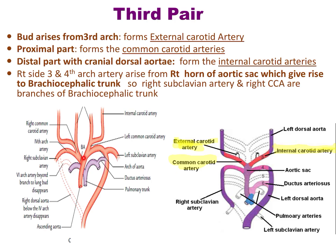On the right side, the third and fourth arch arteries arise from the right horn of the aortic sac — a common trunk. This right horn of the aortic sac gives rise to the brachiocephalic trunk. The third arch artery will form the common carotid, and the fourth arch artery will form the right subclavian. That is why the right common carotid artery and right subclavian artery arise from a common trunk known as the brachiocephalic artery, because the third and fourth pharyngeal arch arteries arise from the right horn of the aortic sac.